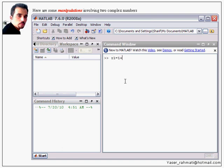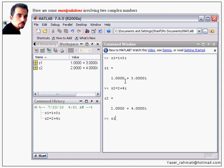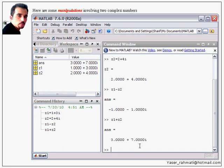Z1 plus Z2. Z1 equals 1 plus 3I. Z2 equals 2 plus 4I. Z1 minus Z2 equal minus 1 minus I. Z1 plus Z2 equal 3 plus 7I. Z1 times Z2, this is the multiplication, minus 10 plus 10i, and Z1 divided by Z2 is equal 0.7 plus 0.1i.